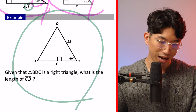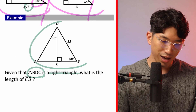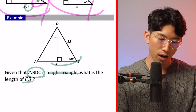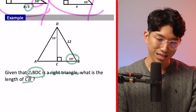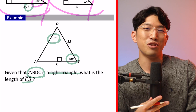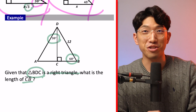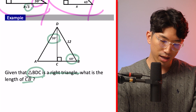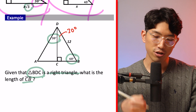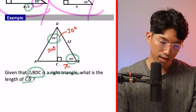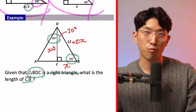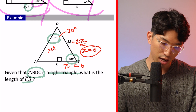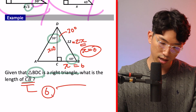Let's try an actual SAT question. Given that BDC is a right triangle with a right angle at D, what is the length of CB? We have a 60° and a 30° angle. That is almost certainly not a coincidence — it's testing us on special right triangles. Since we have 60° here and 90° at D, the remaining angle is 30°. A 30-60-90 triangle has side length ratio X, X√3, and 2X. Since the hypotenuse is 12, we have 2X = 12, so X = 6. Therefore BC equals 6, and the answer is 6.